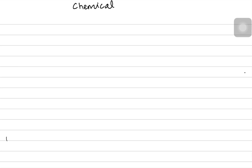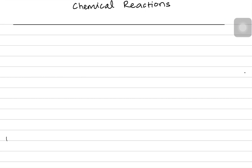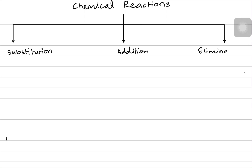Today's video is about the most common chemical reactions in organic chemistry, particularly at the AS level content. When we talk about chemical reactions, there are multiple kinds, but there are three reactions we will keep facing again and again. The first is the substitution reaction, the second is the addition reaction, and the third is the opposite of addition, which we call the elimination reaction.